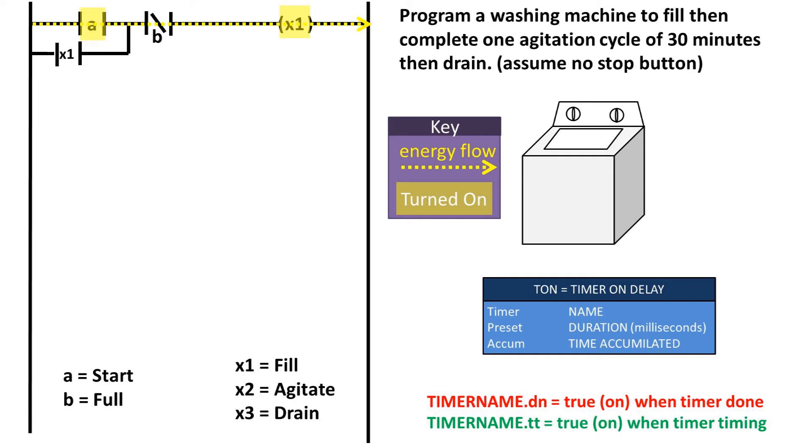Our first rung of logic is stating that if the start button is pressed and the full sensor is not reporting a true or on signal then the washing machine will fill. I have it set up to be a continuous loop that once the fill output is on then the fill output will engage another branch in parallel with the start button to keep the loop on.